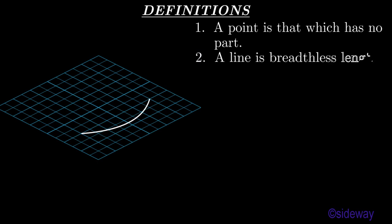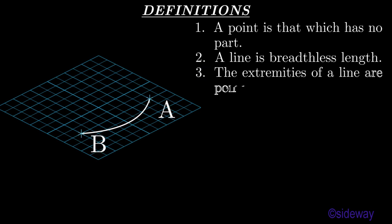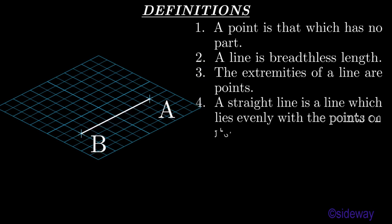A line is a geometric element with only length but with no breadth. The ends of a line are points. A straight line is a line on which points can be evenly constructed.